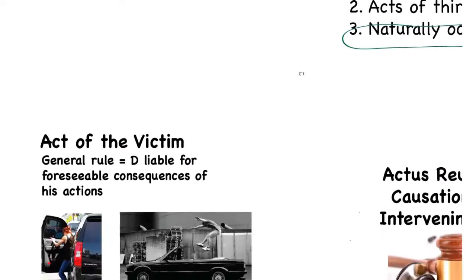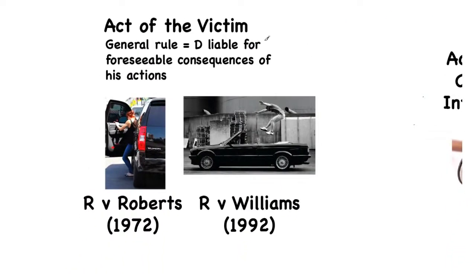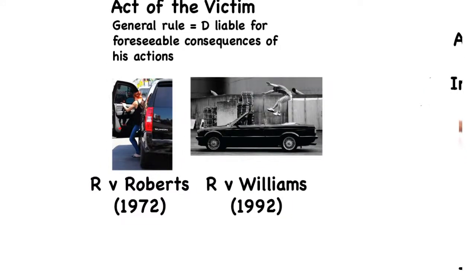We'll start by looking at the acts of the victim. The general rule is that the defendant is liable for foreseeable consequences of his actions — things that are obvious as a result of his actions. Where the victim does something that is not foreseeable, not obvious, that may break the chain of causation. I'm going to use two important key cases to examine that — both involve what are known as escape cases: Roberts and Williams.